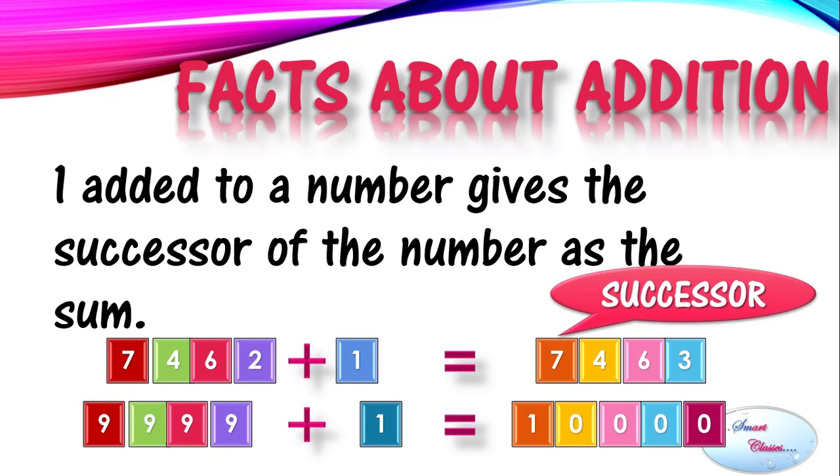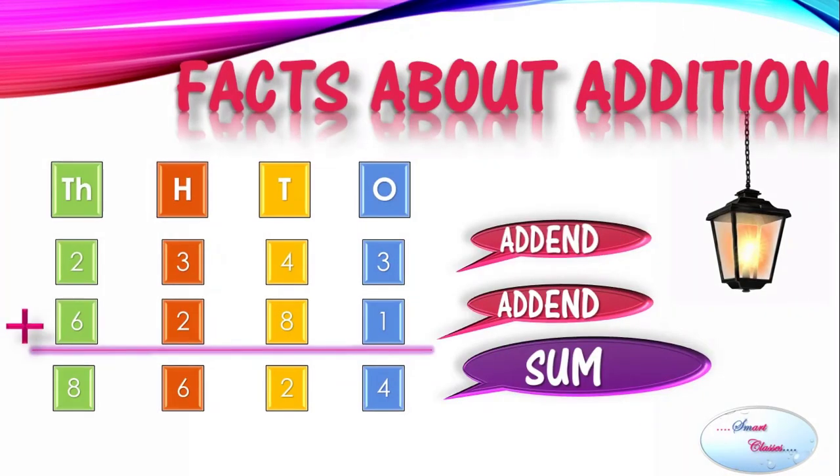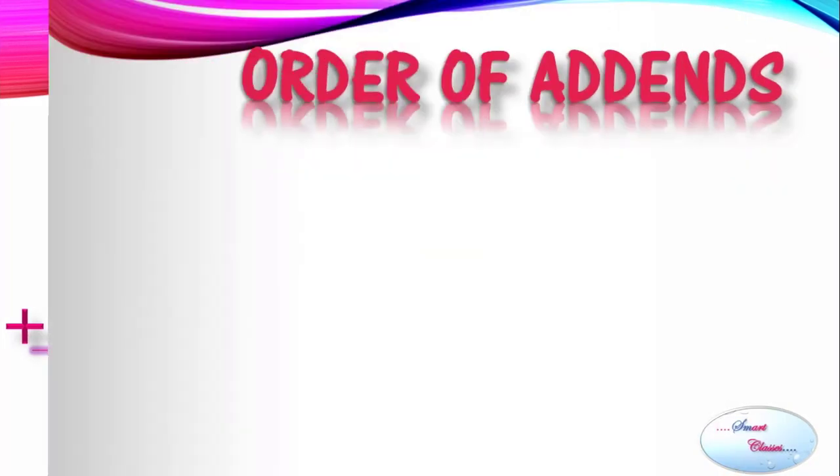Last but not least, a fact about addition is that the numbers which we add together to find the answer, those numbers are called addends. And the answer which we get after adding those numbers is called the sum. Here, 2343 and 6281 are the addends, and 8624 is the sum.